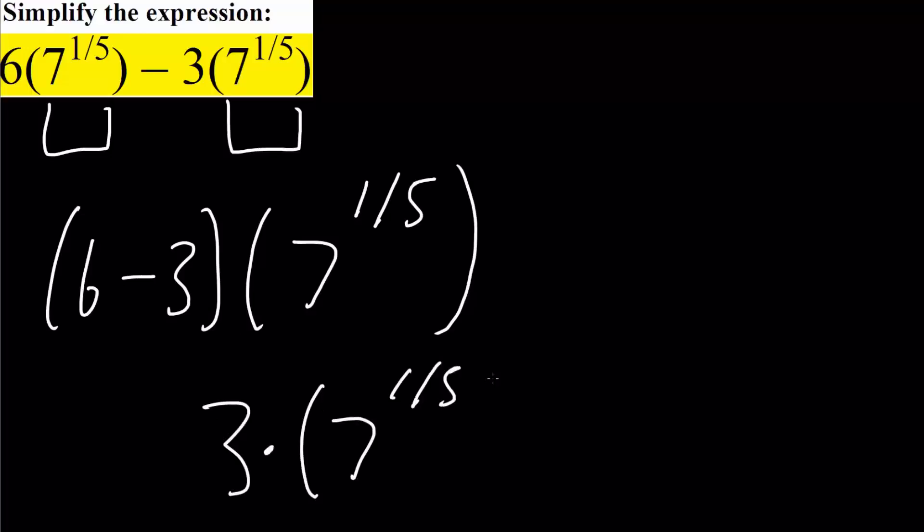So 6 minus 3 is 3 times 7 raised to the 1/5, and this right here would be the final answer, and that's all we need to do for these two problems.